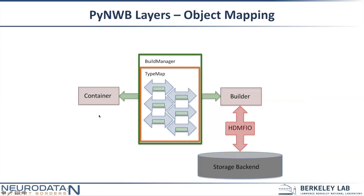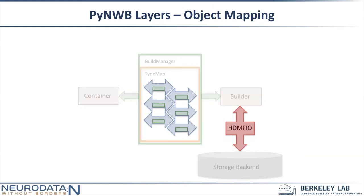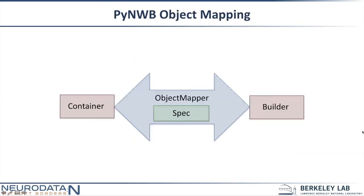Once you've built your container it needs to go into the storage backend. HDMF and PyNWB will do a lot for you, but sometimes they might not do exactly what you want, and so you need to customize this part where a container turns into this intermediate representation for storage. That's what object mappers are — there's one object mapper for each class. The object mapper takes a specification and, based on the specification, uses a set of rules to extract data from your Python object to this abstract layer called a builder.